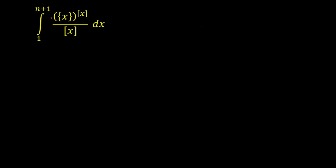We have the integration from 1 to n+1, where the function is {x}^[x] / [x]. The first thing I observe is that since x is varying from 1 to n+1, where n is a positive integer, this function will be discontinuous at many points. So I have to break the limit in such a way that the function becomes continuous. The GIF of x is discontinuous at integer points, so I have to break the limits where x is an integer.